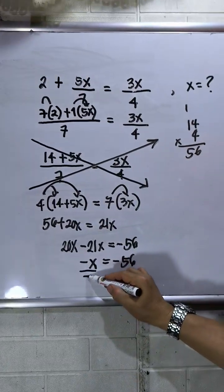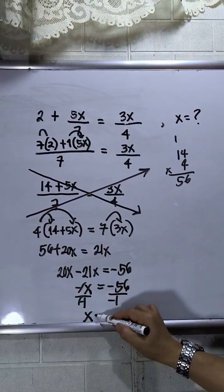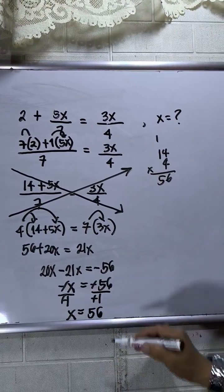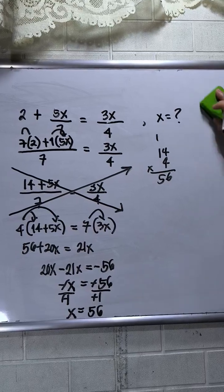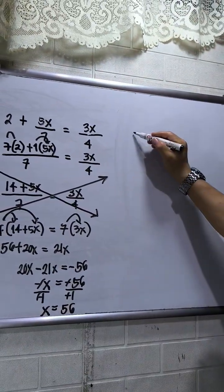Then divide by negative 1 both sides. Negative will be crossed out, then negative also will cross out. So I have now x equals 56. Now I will prove it to you that my x value is correct, so I will plug in x equals 56 in the given equation.